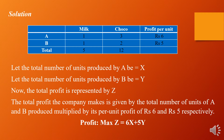Let the total number of units produced by A be X and by B be Y. The total profit is represented by Z. The total profit equals profit per unit multiplied by units produced: Z = 6X + 5Y. The objective of the firm is to maximize that profit, so the objective function is: maximize Z = 6X + 5Y.